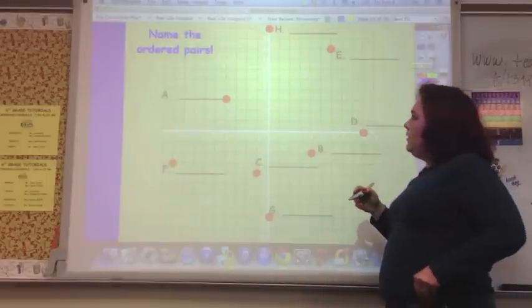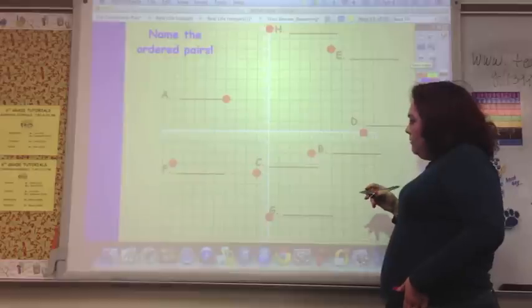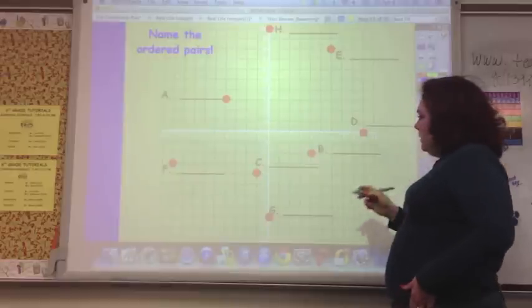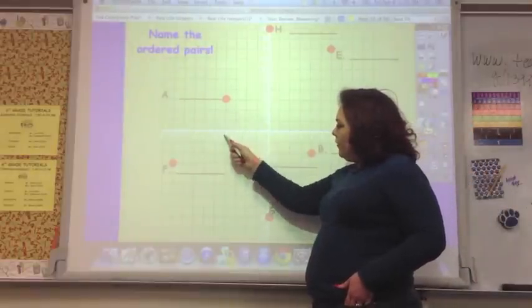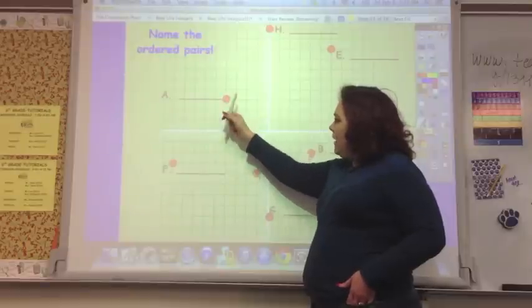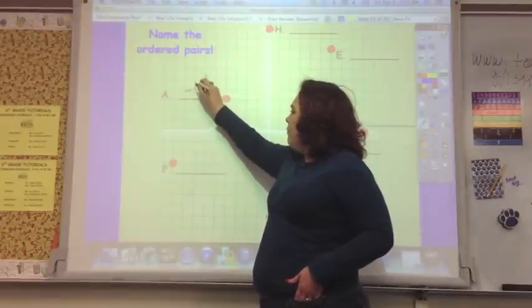Name these ordered pairs. So, this, A, you go over negative four, up positive three. So, negative 4, 3. You still go on the x coordinate, and then the y coordinate.